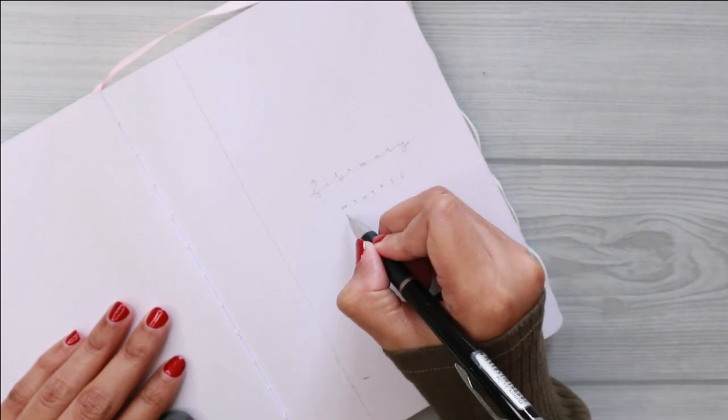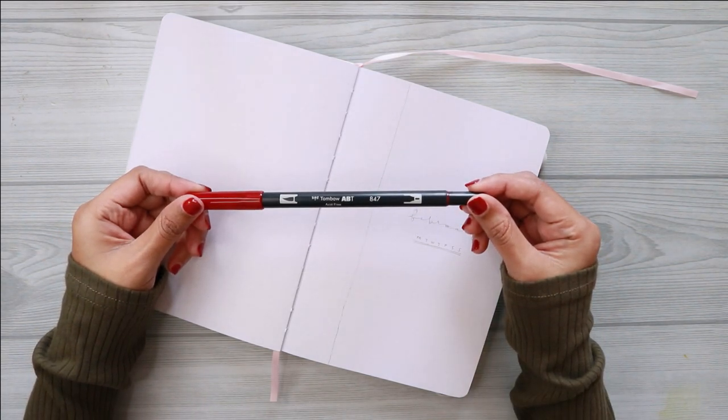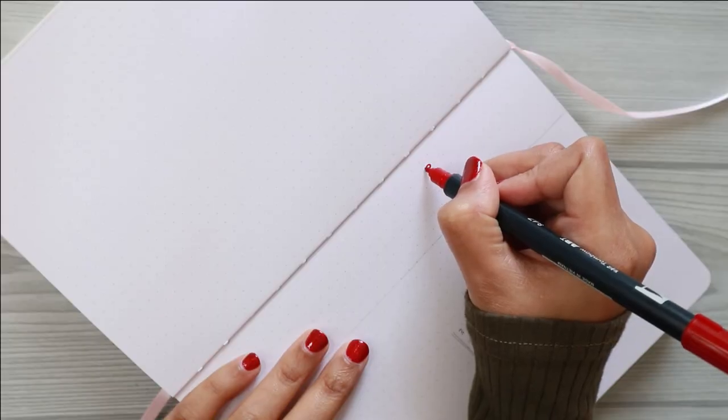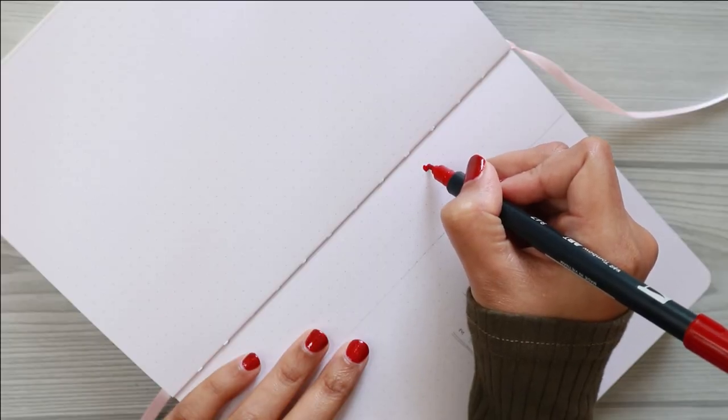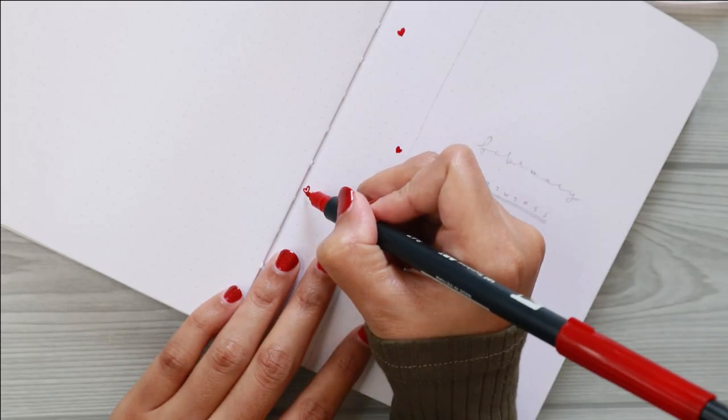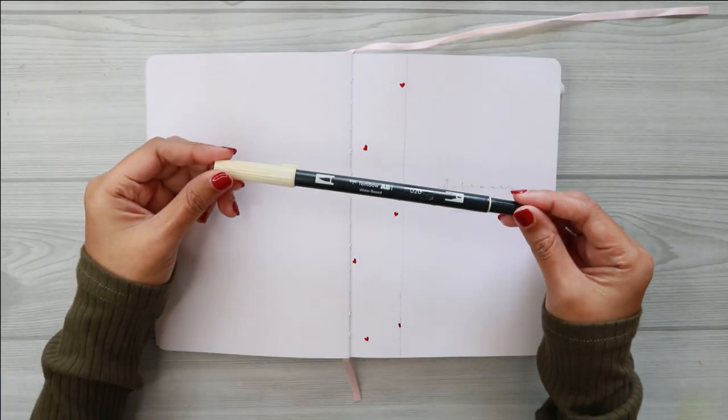For this cover page, I use my Tombow Dual Brush Pen in code 847 and 020 to draw some heart shapes on the left-hand side of the page. As you can see, I am using the fine tip side to draw the heart shapes because these shapes are very small.